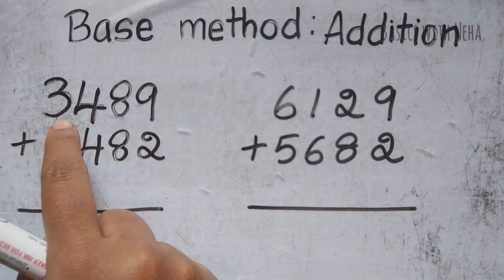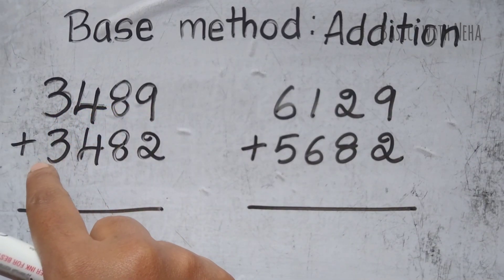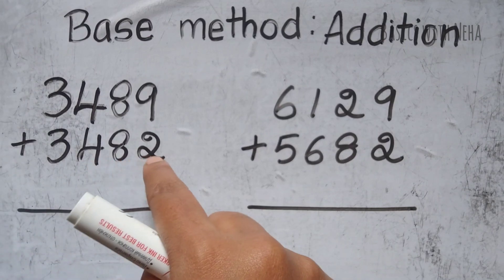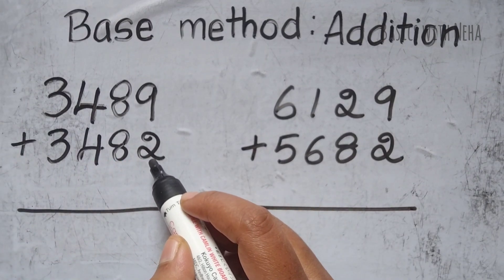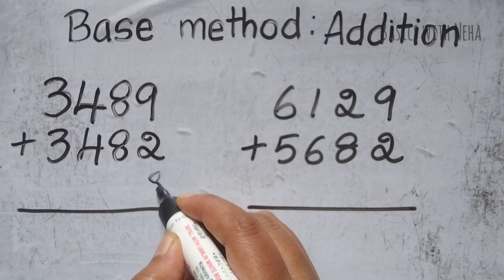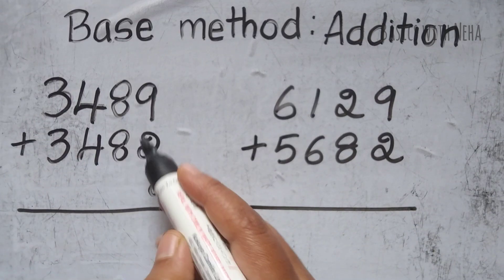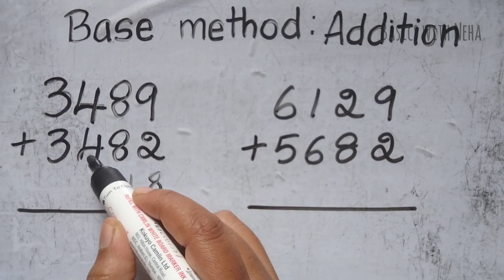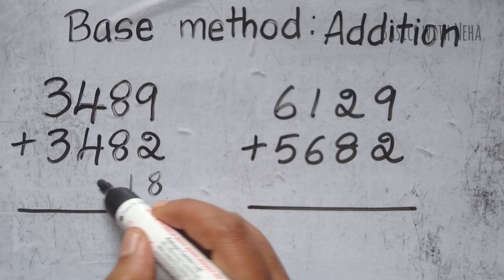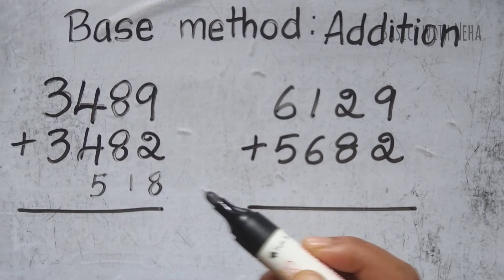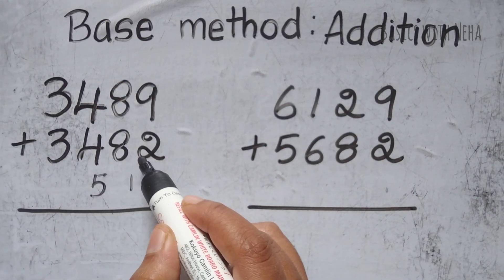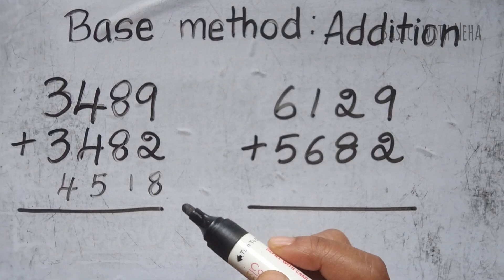The next question. 3489 plus 3482. Complement of 2 in base 10 is 8. Complement of 8 in base 9 is 1. Complement of 4 in base 9 is 5. Then for this number I'm going to take 4000 as my base.